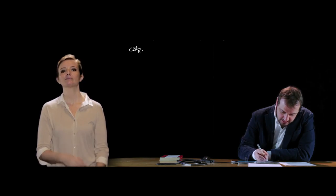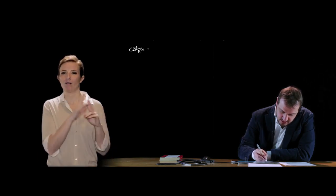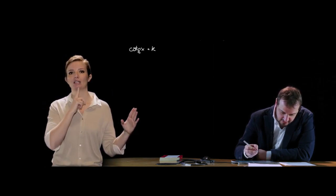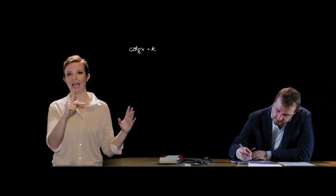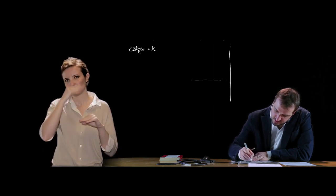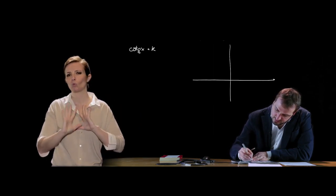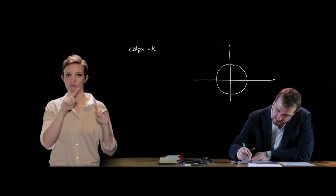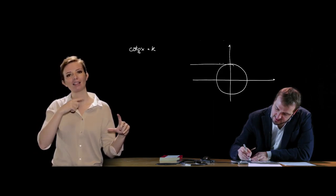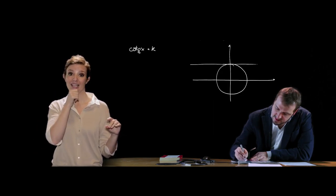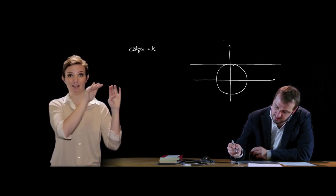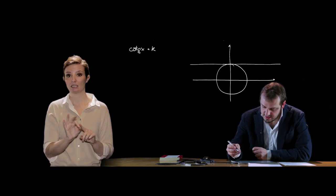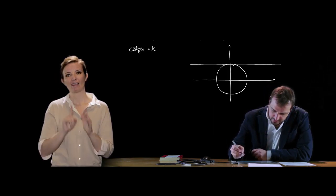Finiamo con cot x = k, quindi angoli aventi una data cotangente. Il discorso è sempre lo stesso: circonferenza goniometrica, questa volta la tangente va presa in corrispondenza di 90°, sostanzialmente del punto di coordinate (0, 1).